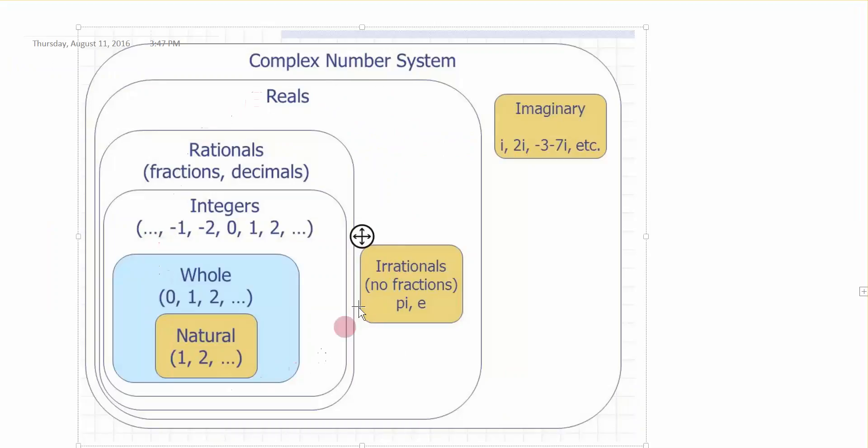The real number system is comprised of this portion of this graphic on the left-hand side. The real numbers are all the numbers you're used to dealing with: the numbers you count your fingers with, integers, rational numbers like fractions and decimals, and irrational numbers such as pi and e.